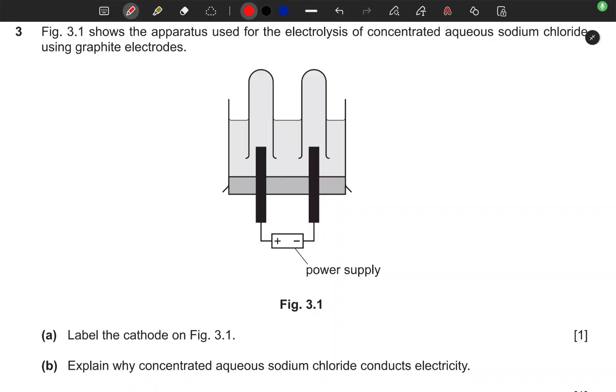Hello chemistry students, welcome to another revision. We have a question here that says Figure 3.1 shows the apparatus used for the electrolysis of concentrated aqueous sodium chloride using graphite electrodes. So this is a figure here, I hope you can see it clearly.